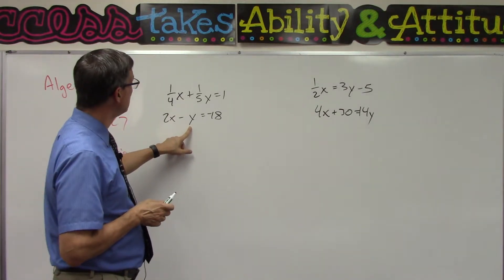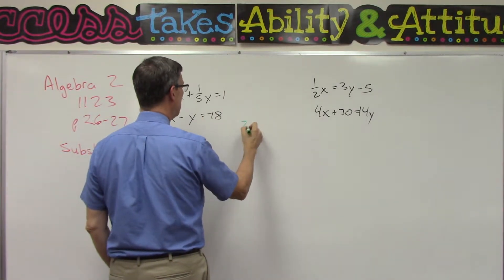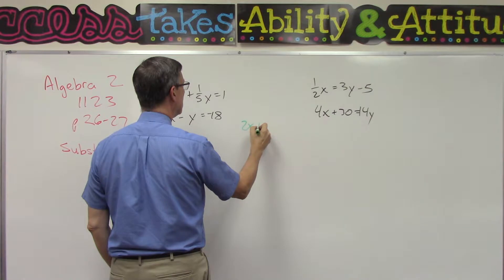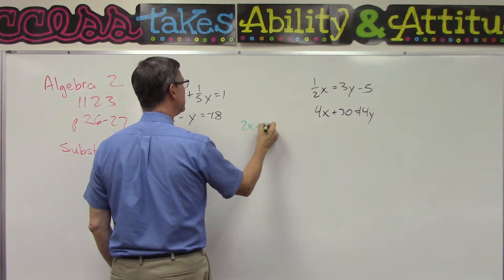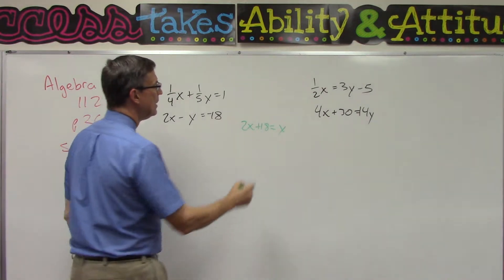First off, I see that I have just Y right here. So I could take this equation and switch sides, switch signs—remember how to do that? So 2x, bring the 18 over, becomes plus 18 equals, take the Y to the other side, and now you have Y.